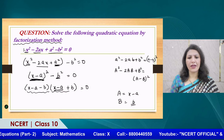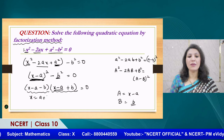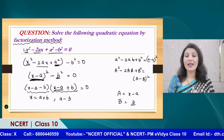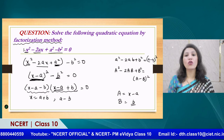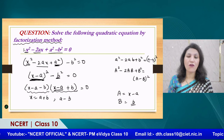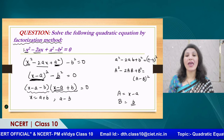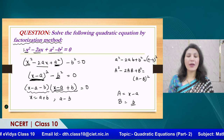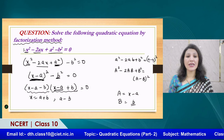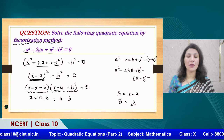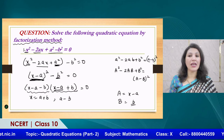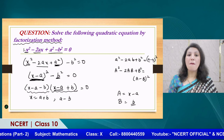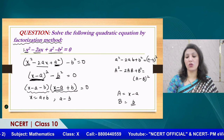In the previous session we discussed splitting the middle term. For questions where the middle term coefficient involves unknown constants like a, b, c, there are specific tricks. If factorization does not work directly, the quadratic formula is the best option. Let us now look at one more question of this type.